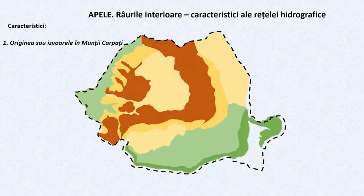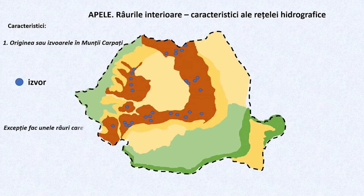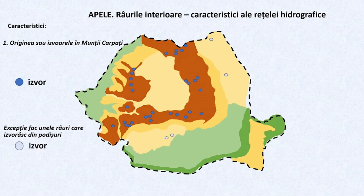Datorită unor factori specifici, cum ar fi alcătuirea substratului sau a reliefului, cantitatea de precipitații căzută sau acoperirea cu păduri cu vegetație, cele mai mari arterii hidrografice ale României își au izvoarele în munții Carpați. Excepție de la această caracteristică o au unele râuri ce își au originea în unitățile de podișuri, cum ar fi cele din Podișul Moldovei, în Podișul Getic sau al Dobrogei, iar unele mici râuri chiar își au originea în unitățile de câmpie.